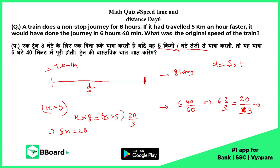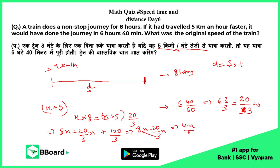Solving the equation: 8x equals 20 upon 3 times (x plus 5), which gives 8x equals 20 upon 3x plus 100 upon 3. Then 8x minus 20 upon 3x equals 100 upon 3. I hope you liked the solution, thank you.